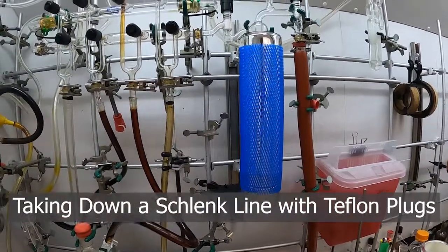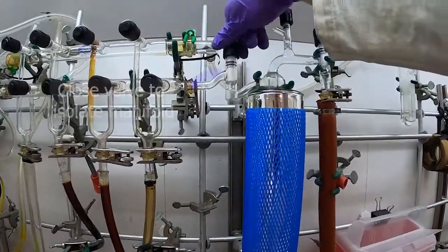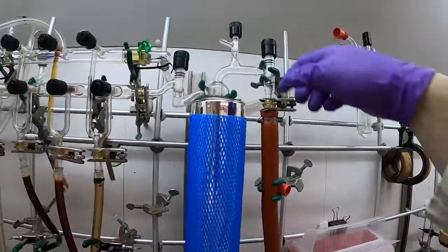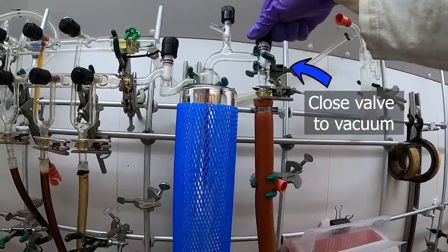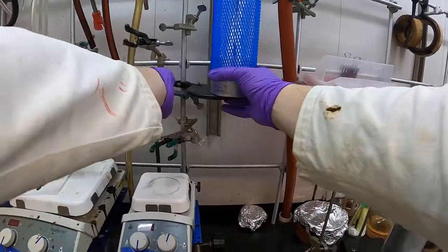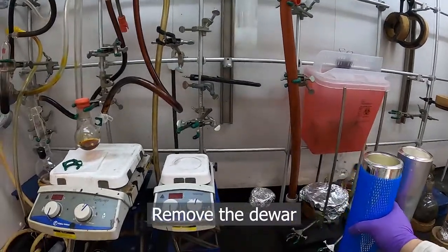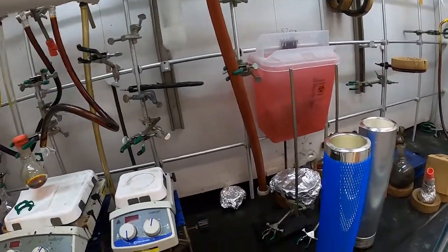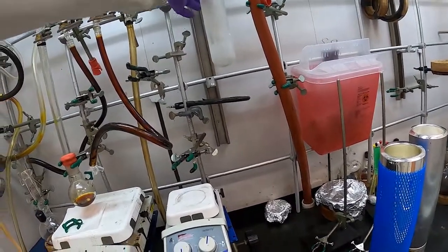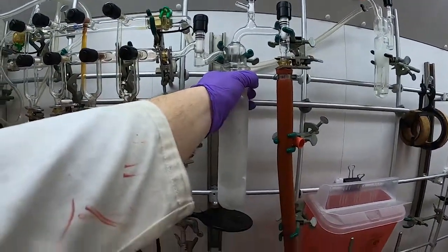So to take down the vacuum trap for our Schlenk line with the Teflon stoppers, we want to first isolate the manifold by closing this valve as well as the vacuum side. Then we can remove our dewar while we hold on to the trap. Hold on to the trap up here.